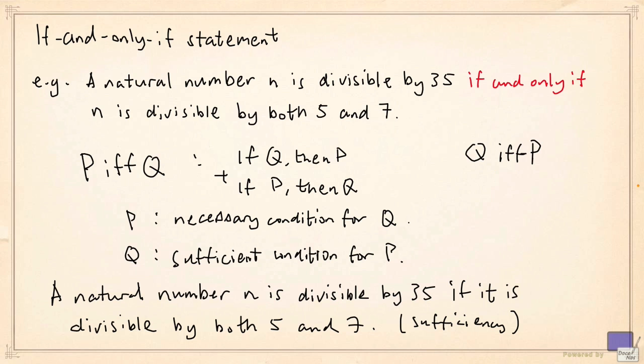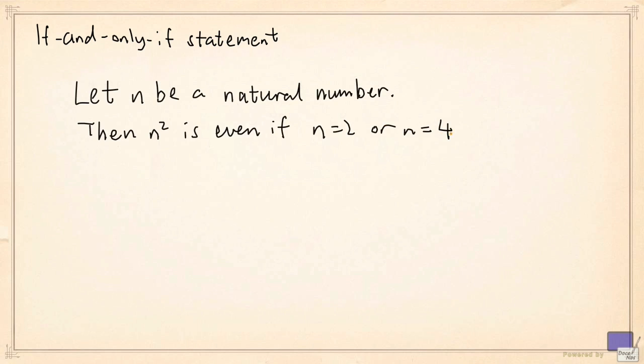For instance, the following is clearly true. Let n be a natural number, then n squared is even if n is 2 or n is 4. And one would have come to this perhaps by some sort of experimentation. And then one would proceed to ask if n squared is even for more values of n other than 2 and 4.